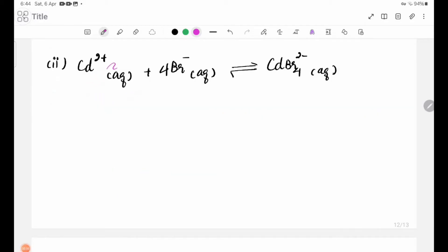Number two equation: CD2+ aqueous plus 4Br- aqueous, reversible reaction, CDBr4 2- aqueous. The equilibrium expression KC equals CDBr4 2- concentration divided by CD2+ concentration times Br- concentration to the power 4.